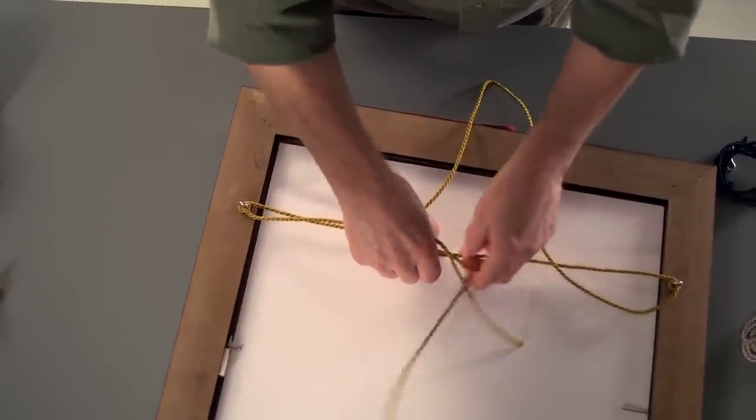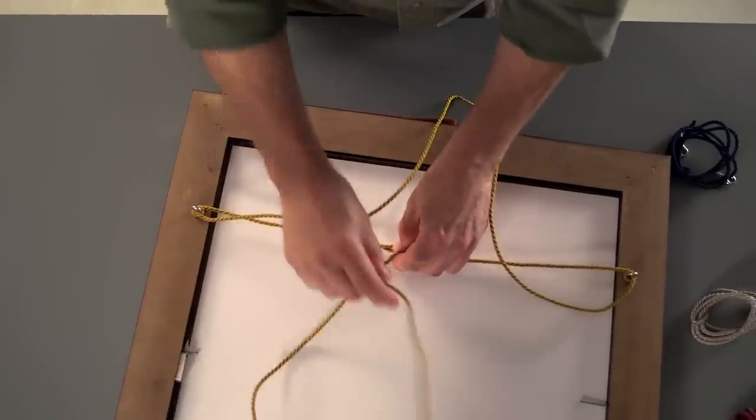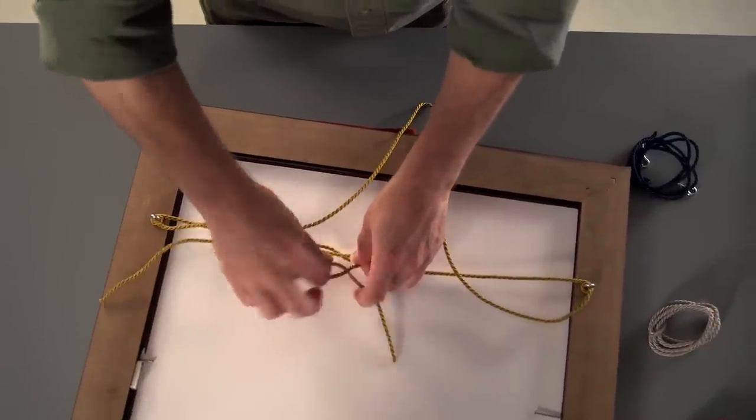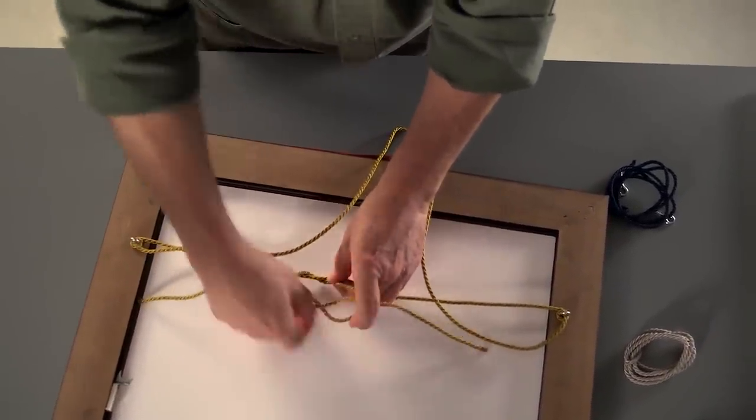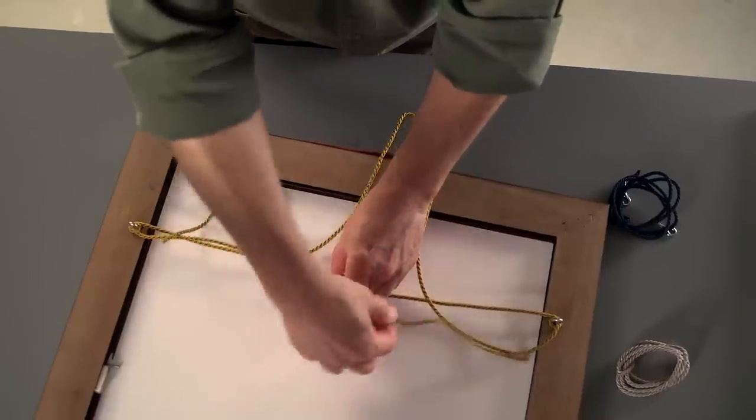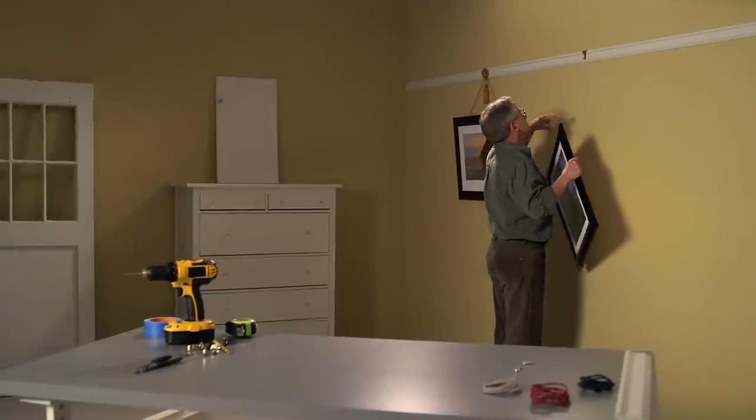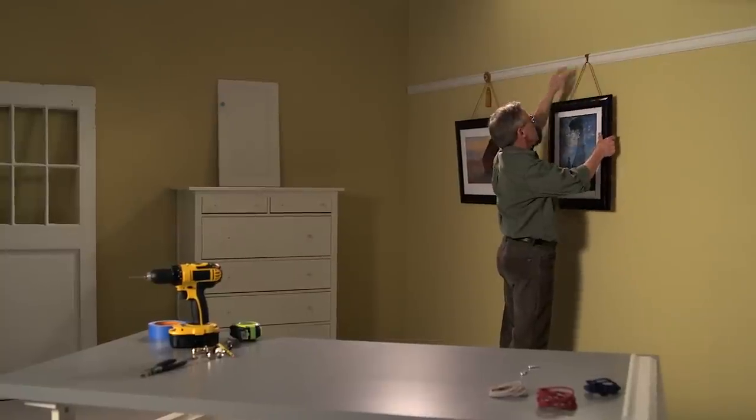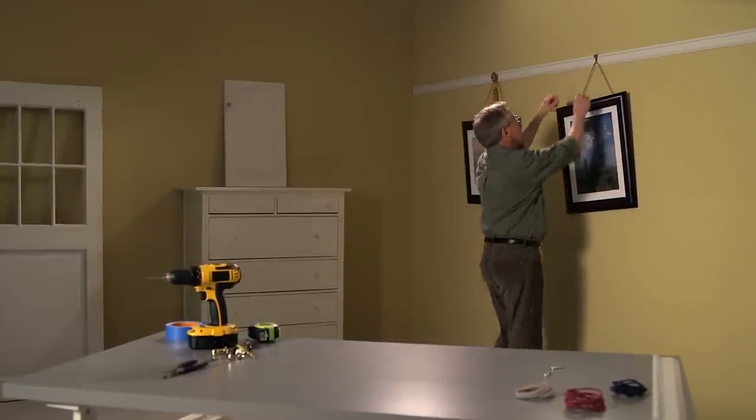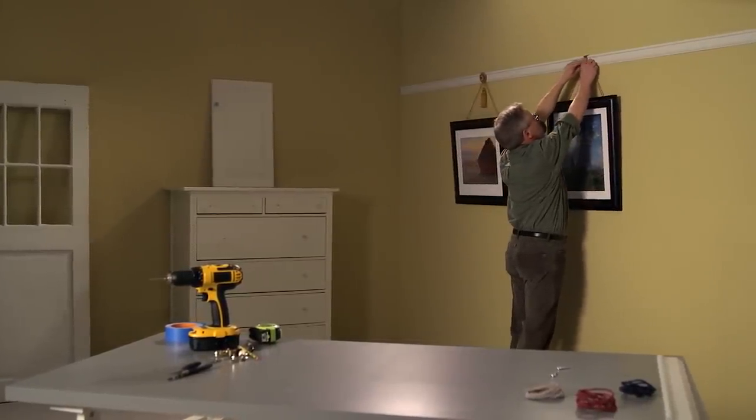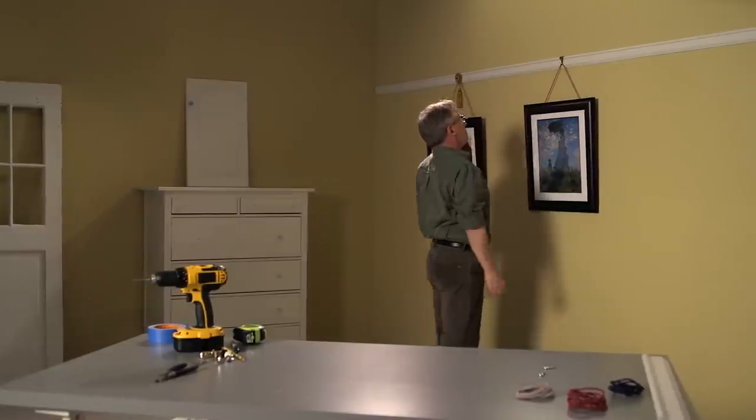Now, tie a knot of the two ends in the middle. If you're hanging something especially heavy, you want to definitely be sure you tie a good knot. Lift the picture in place. Drape the cord over the hook. If the picture isn't level, slide the cord back and forth over the hook until it hangs straight.